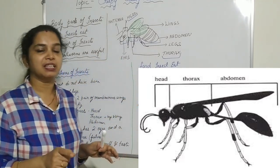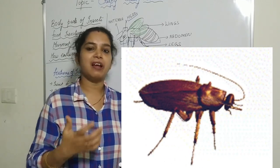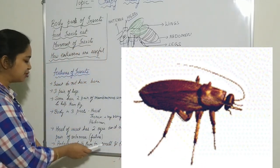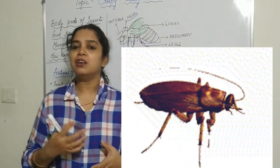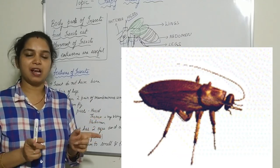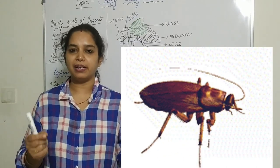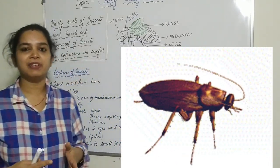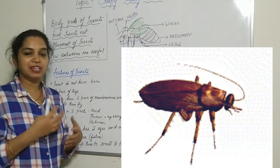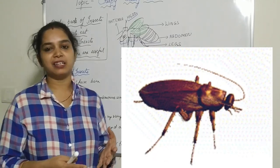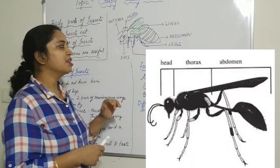The antennae are also called feelers because they help the insect to touch, smell, and taste things that come their way. You might have seen the cockroach — it has a very long, thin antenna so that it can feel, smell, and taste any food. If any danger is present, the insect can feel it through the antennae. That is why they are called feelers.